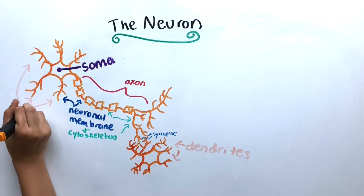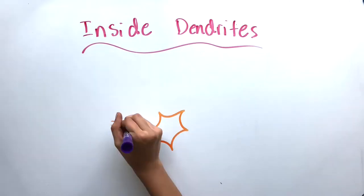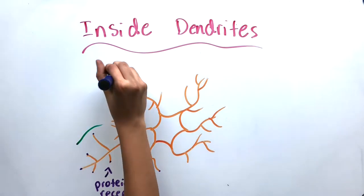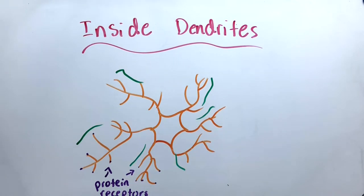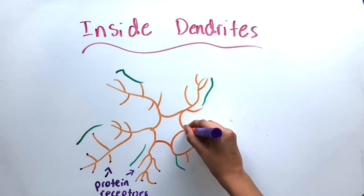The dendrites of a neuron are covered with synapses and contain protein receptors that detect neurotransmitters in the synaptic cleft. These dendrites increase the surface area available for receiving incoming information.